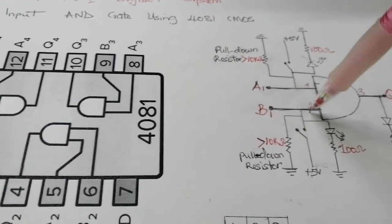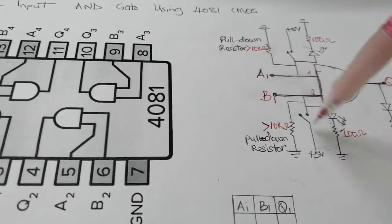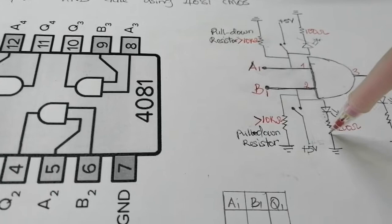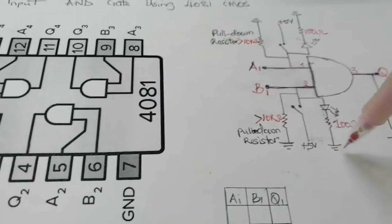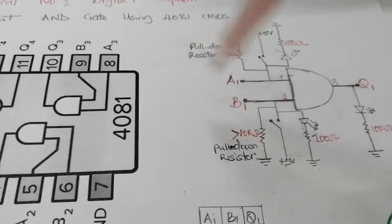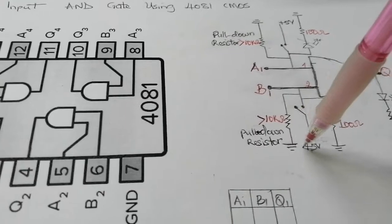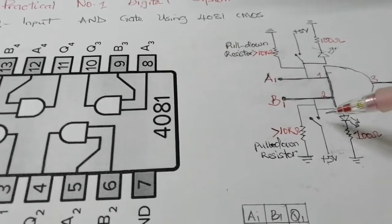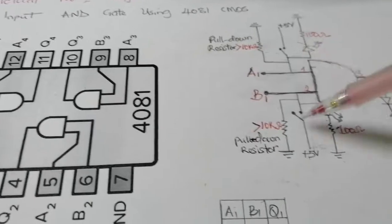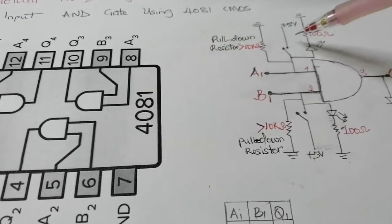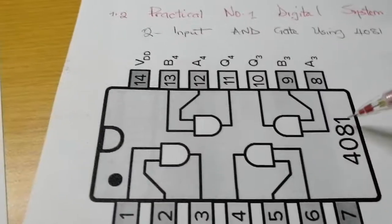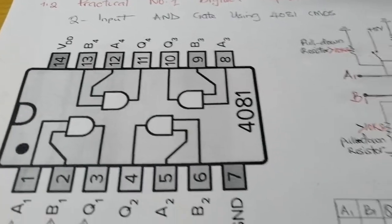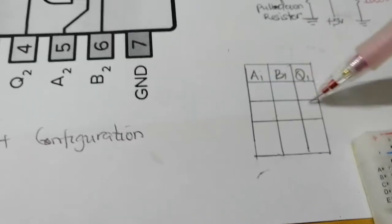For the second input it's pretty much the same: connect your switch with 5 volts, then connect your LED and resistor in series, then to ground. Connect the pull-down resistor to ground as well — remember the value should be greater than 10 kilo-ohms. I'm using push buttons, but you can use switches. Note: I'm using a 4081 but you might be given another model that performs the same function.